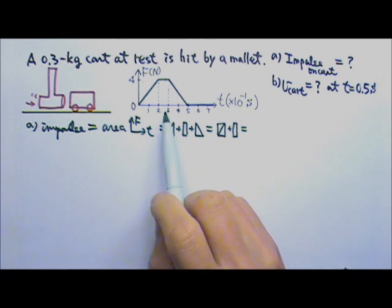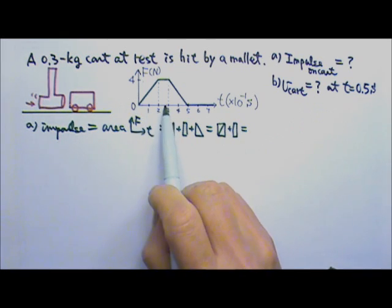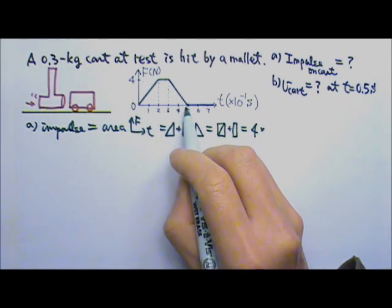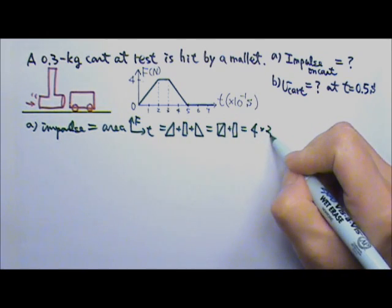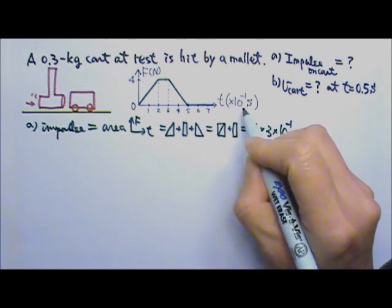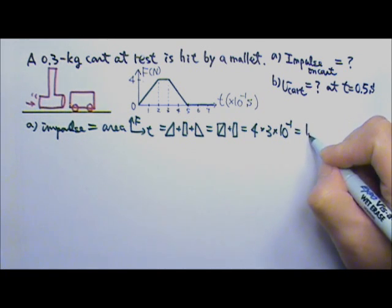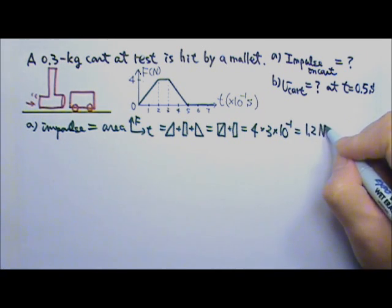Which means the area will be the area of this rectangle, which has a height of 4 newtons and a base of 3 times 10 to the negative first second. So this gives us 1.2, and that will be newton second.